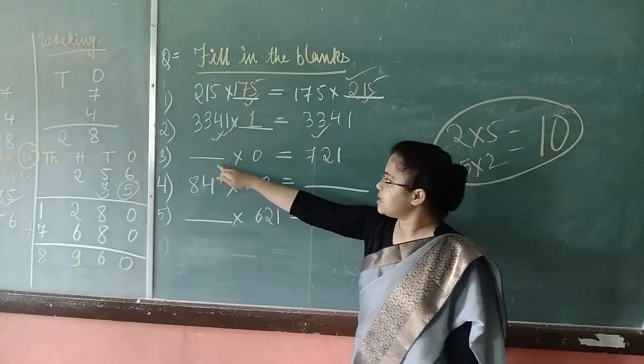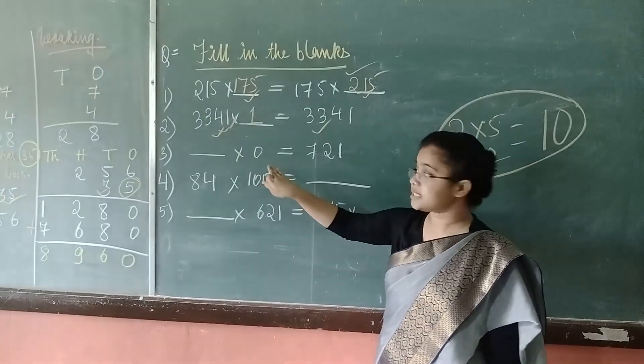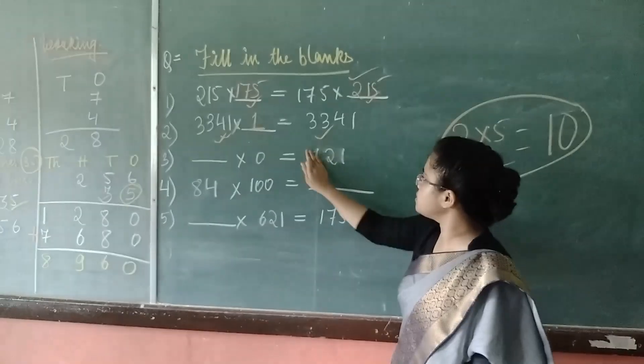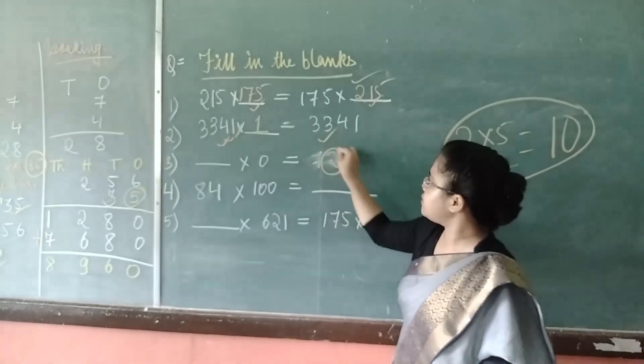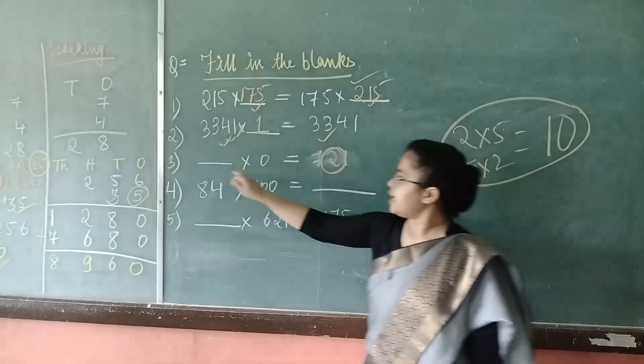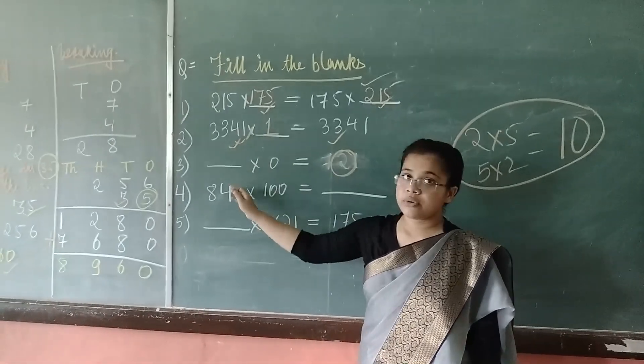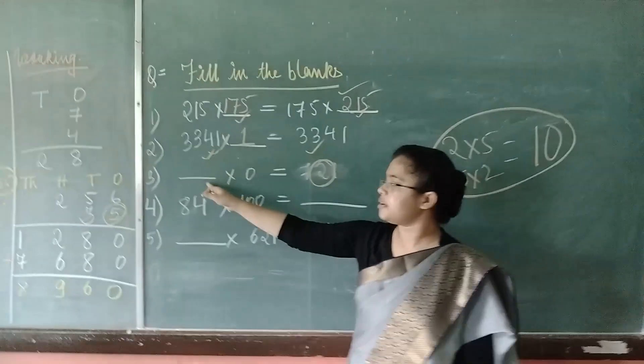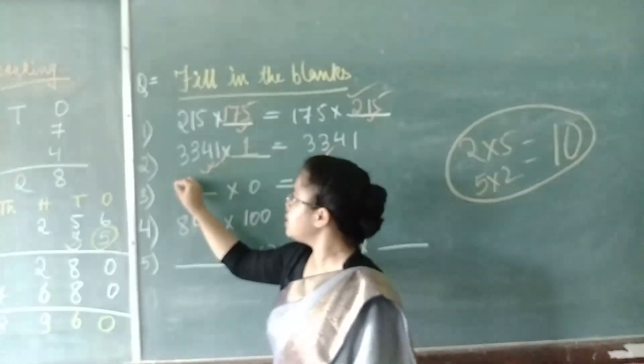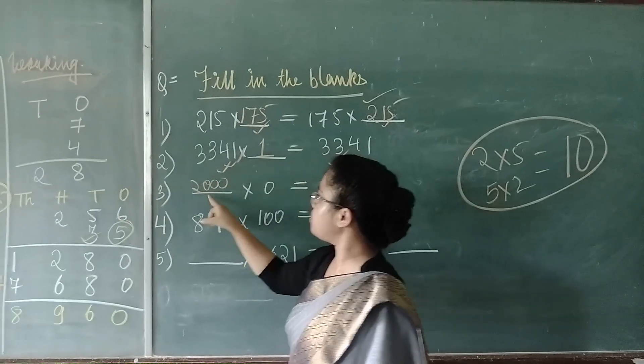This question, a blank is there and when it is multiplied by zeros, the result will be 0. So, here you can put any number. It is not so that you have to write a particular number. You can put 5, 10, 15, 2000, any number you put.